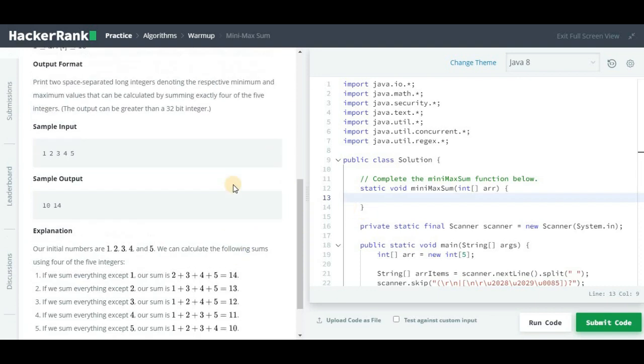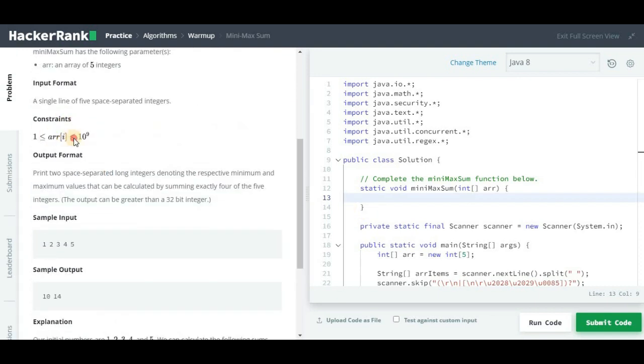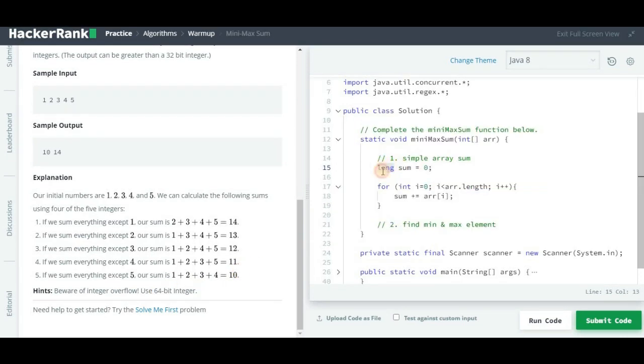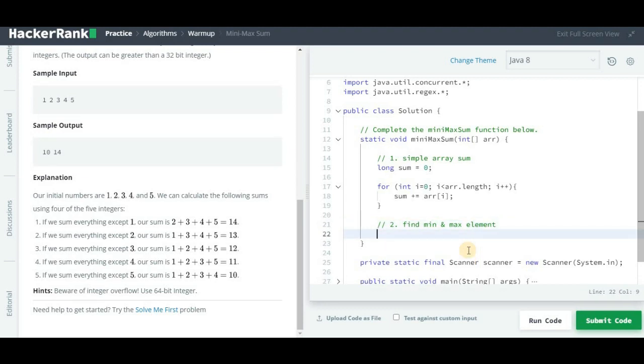Here one more condition is there. If you look into the constraints, it says each element of the array can be less than or equal to 10 raised to power 9, so output can be greater than 32-bit integer. That's why we will take the 64-bit integer which is long. I have copied this code from simple array sum, but instead of taking the data type as int, I am taking it as long.